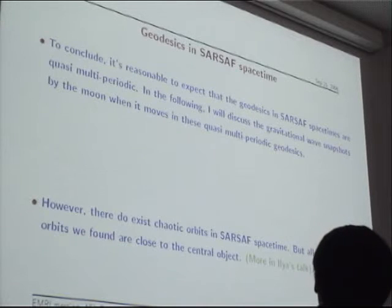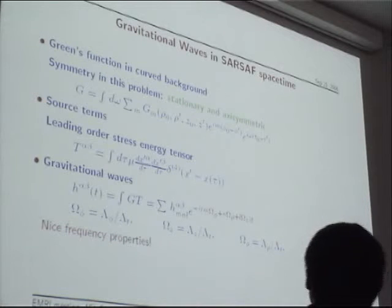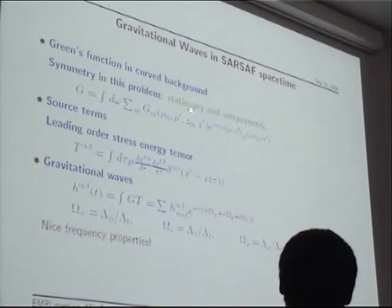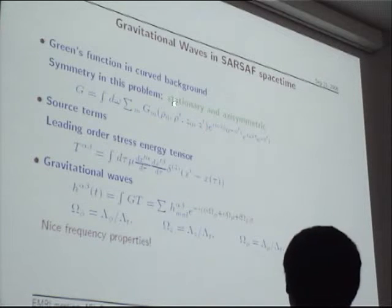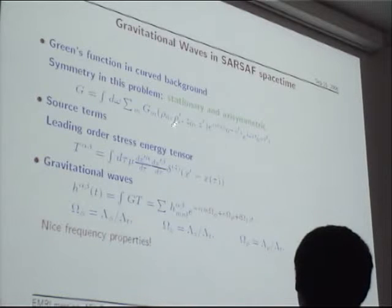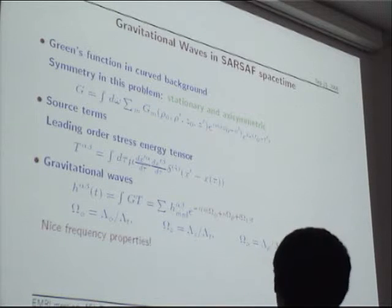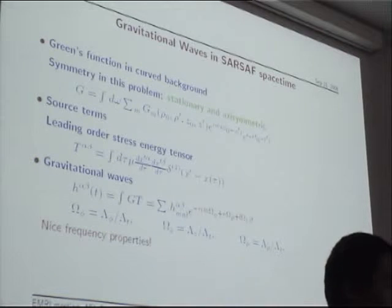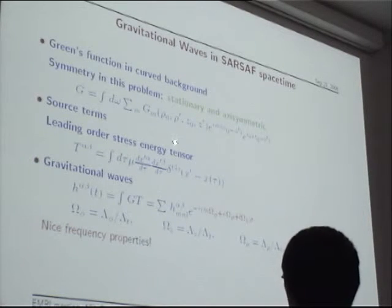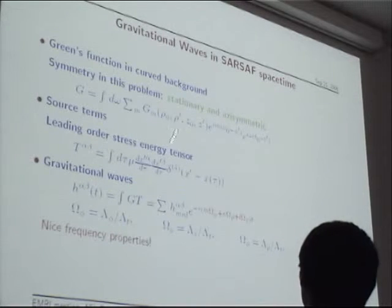After understanding the geodesics in this spacetime, let's consider the wave generation. To calculate the gravitational waves, I use the Green's function method. We have these two symmetries — stationary and axisymmetry — so the Green's function must take a specific form. The phi and t coordinates must be separable and appear only in the exponential function. The source can be expressed using the stress-energy tensor for a point particle. After combining the Green's function and the source, we can calculate the gravitational wave.